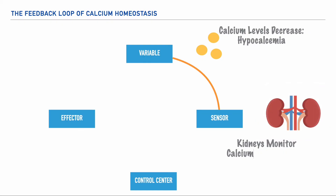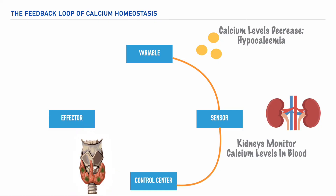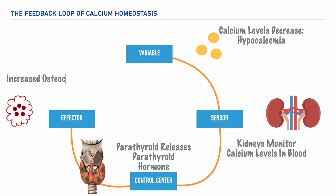So the kidneys would then relay this message to a control center, which is the brain. And the brain would task the parathyroid gland to secrete parathyroid hormone. Parathyroid hormone would then lead to the action of an effector — increased osteoclast activity. The osteoclasts will reabsorb bone tissue, which contains calcium, and this calcium can then be deposited into the blood, increasing blood calcium levels, which ultimately reverses the initial hypocalcemia.